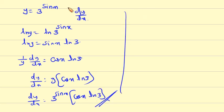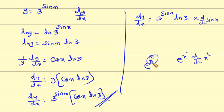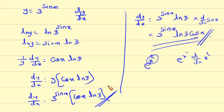This is of the form a raise to x, so using the formula: d by dx of a raise to x equals a raise to x into ln a into d by dx of the exponent. Similarly, d by dx of e raise to x square equals e raise to x square into d by dx of x square. Therefore d by dx of 3 raise to sin x equals 3 raise to sin x into ln 3 into cos x. This is the final answer.